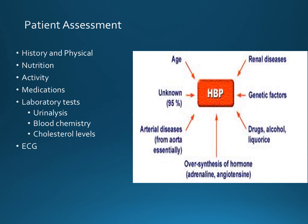Hypertension assessment must include a thorough health history covering possible risk factors such as age, race — noting that being African American, particularly male, is a risk factor — dietary habits such as high sodium intake, obesity, sedentary lifestyle, alcohol abuse, insulin resistance, and high stress levels. Laboratory tests such as urinalysis, blood chemistry, and cholesterol levels will also need to be done, as well as a 12-lead EKG.